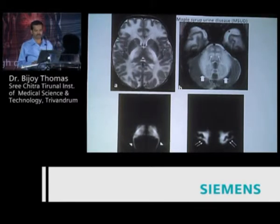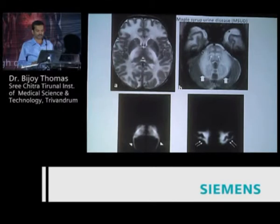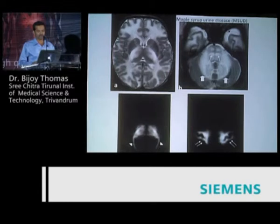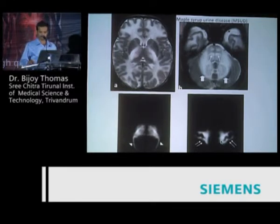You can see the white matter of the cerebellum appearing swollen. The posterior dorsal tracts are hyperintense, the corticospinal tracts are hyperintense, and you can see spared areas with myelin edema. The posterior limb of the internal capsule is swollen. You can see restricted diffusion in the already myelinated—now demyelinating—areas: the posterior thalamic radiations, optic radiations, thalamus, and corticospinal tract. If you see this combination, practically there is no other differential diagnosis other than maple syrup urine disease.